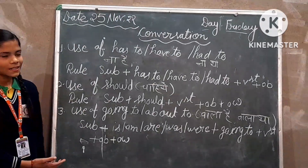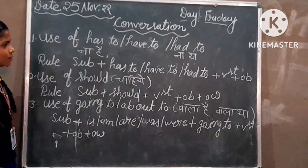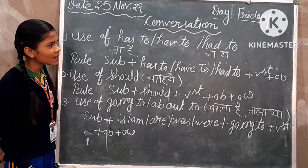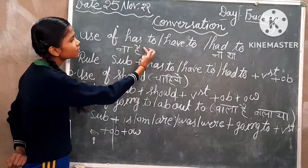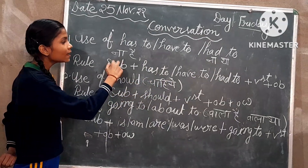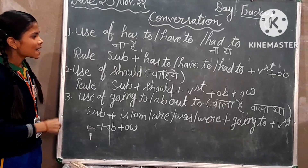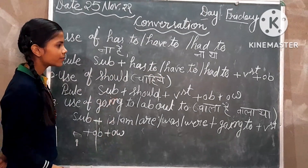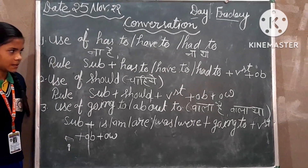Today's conversation class covers 'has to,' 'have to,' and 'had to.' Has to or have to is present tense, and had to is past tense. The structure is: subject plus has to or have to, followed by the first form of the verb plus object.